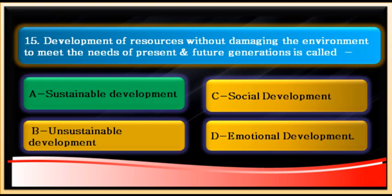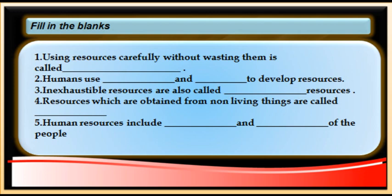Now let's do some fill-in-the-blanks. Number one: using resources carefully without wasting them — what is it called? Number two: humans use what to develop resources? Number three: inexhaustible resources are also called what? Number four: resources obtained from non-living things — what are they called? Number five: human resources include what of the people?